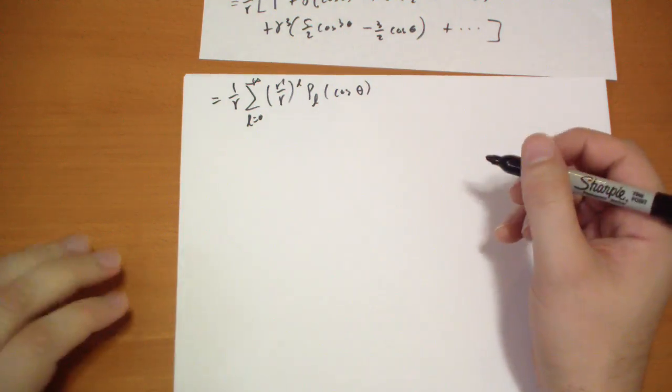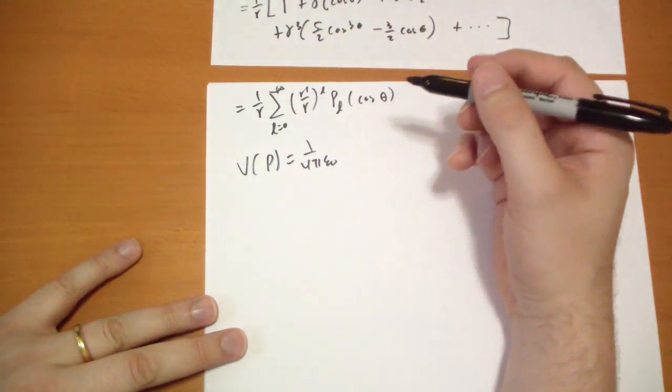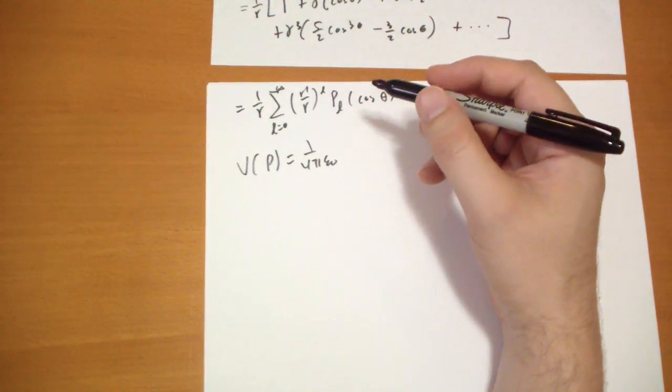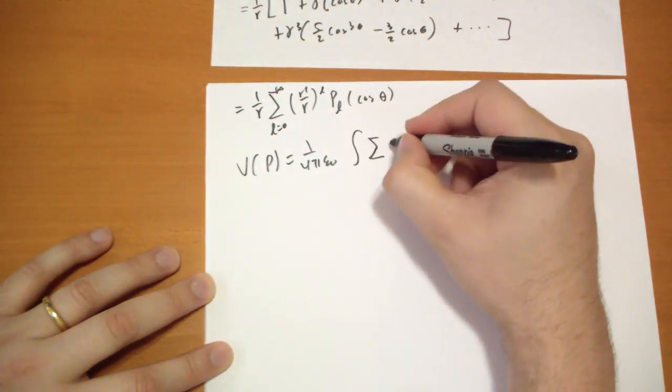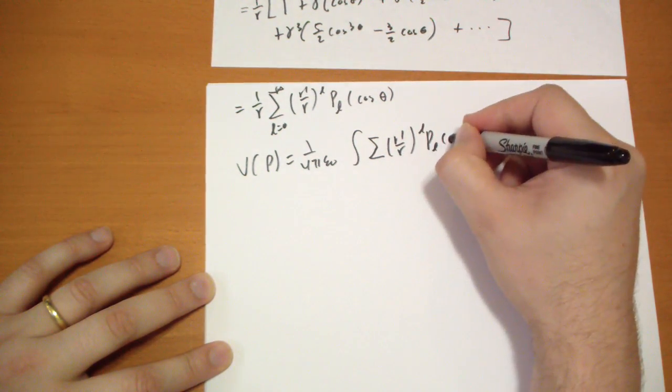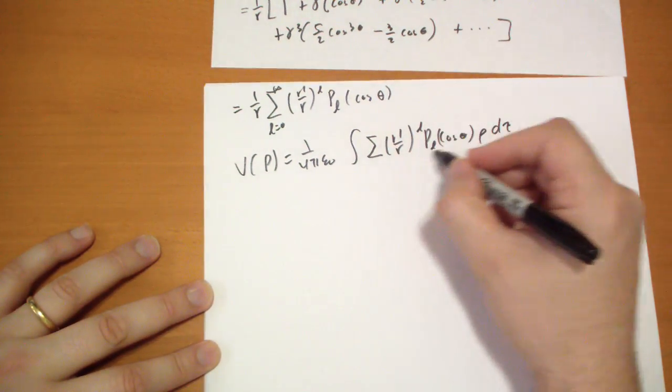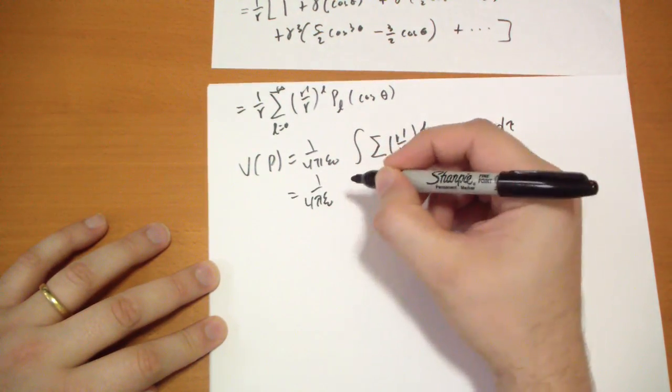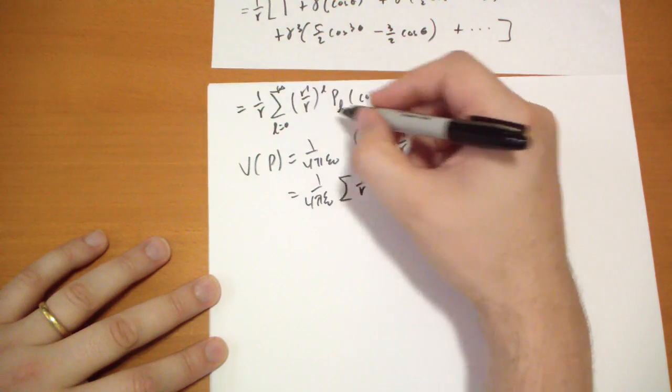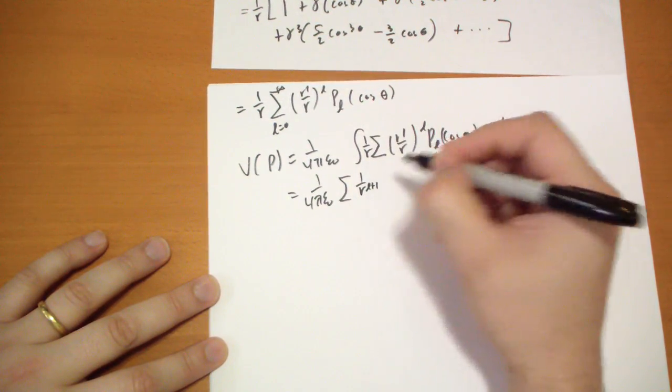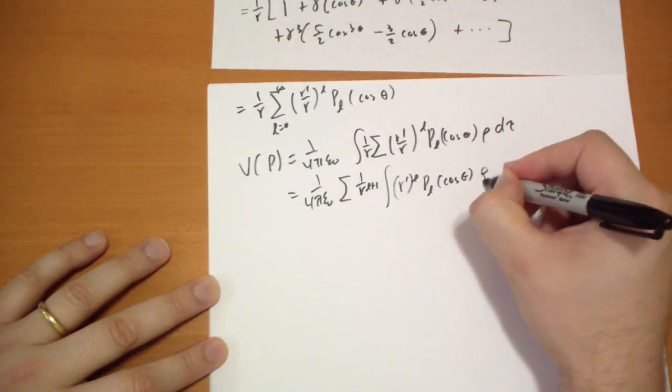So the potential ends up being 1 over 4π epsilon naught. We're doing an integral of the sum we just described: 1 over R to the (L+1) times the integral of r prime to the L times P_L cos theta times rho d tau.